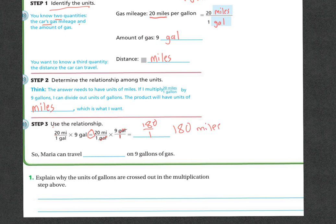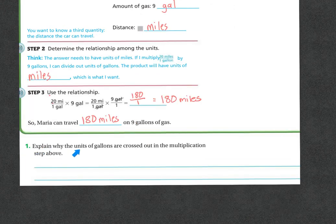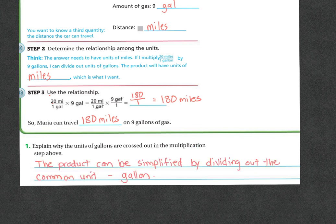Because we cross multiplied the gallons, right? So Maria can travel 180 miles on nine gallons of gas. Now let's explain why the units of gallons are crossed out in the multiplication step above. Well, the product can be simplified by dividing out the common unit, gallon.